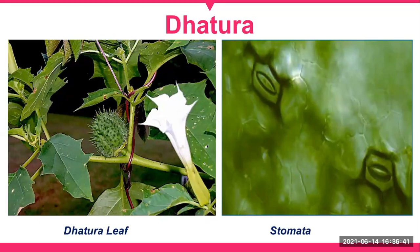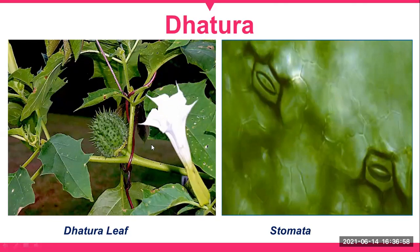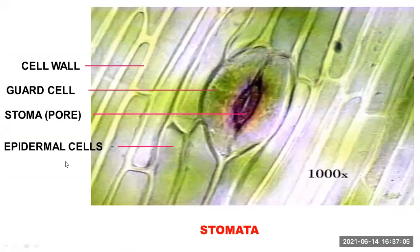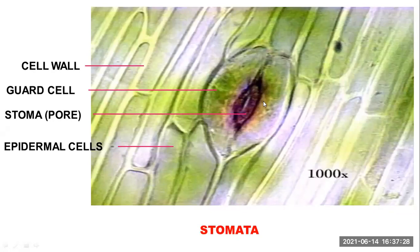We have taken Datura leaves as an example for determination of stomatal number and stomatal index. This is a microscopic view of stomata under 1000x lens. The cell wall will look like this, and the black colored portion — that pore-like structure — is called stoma.